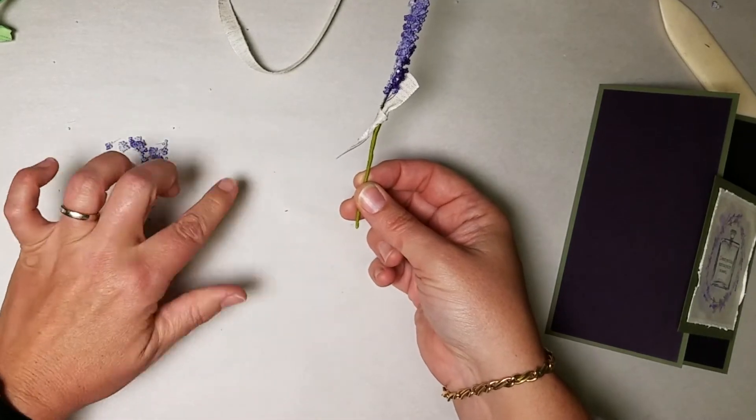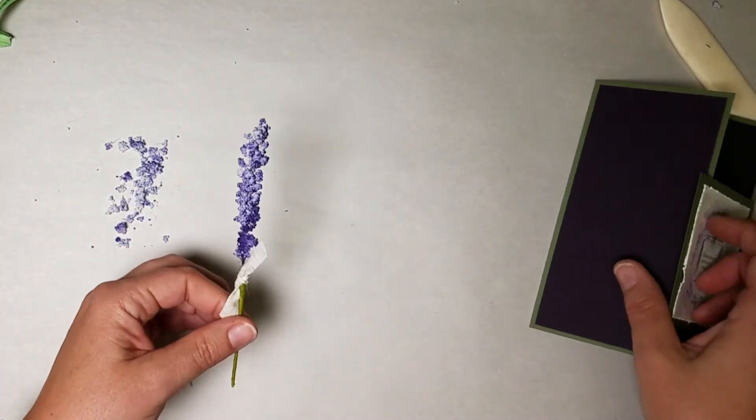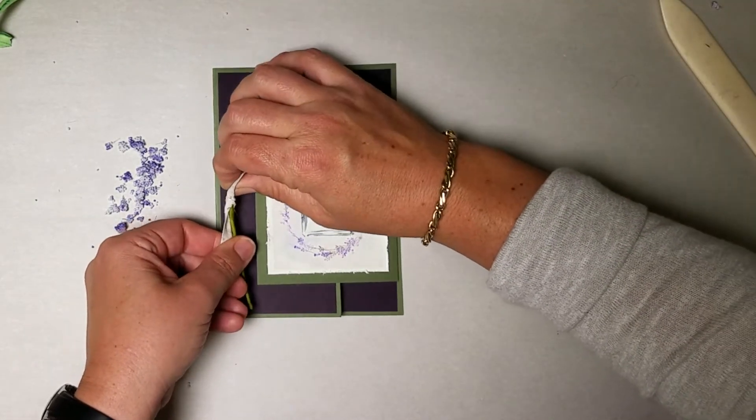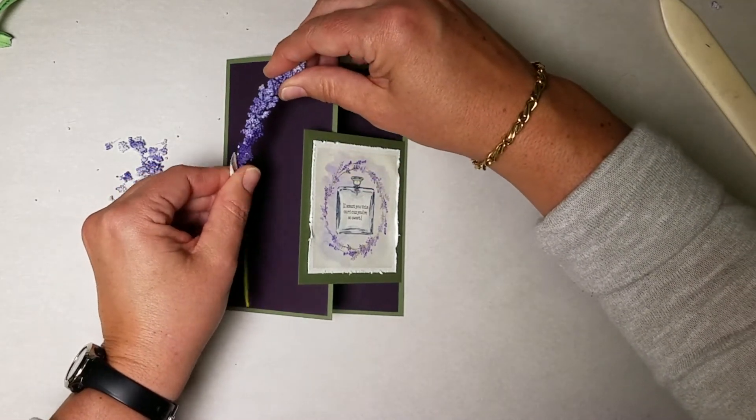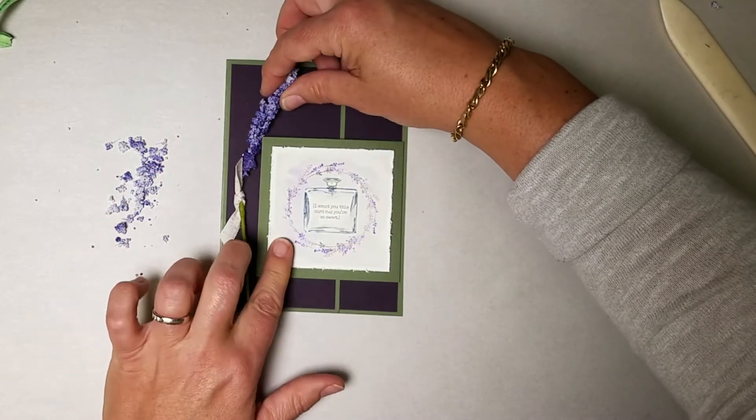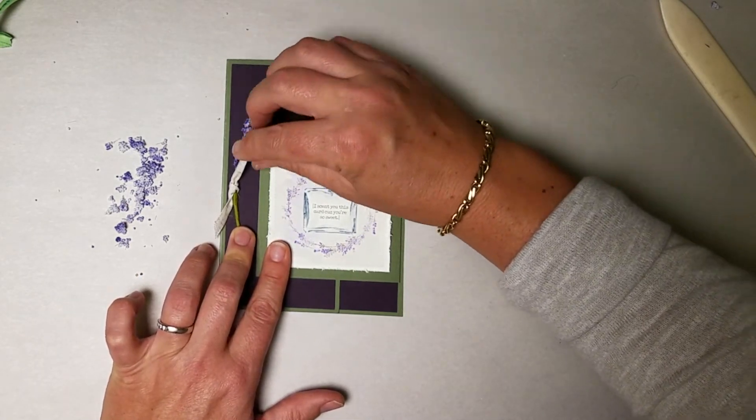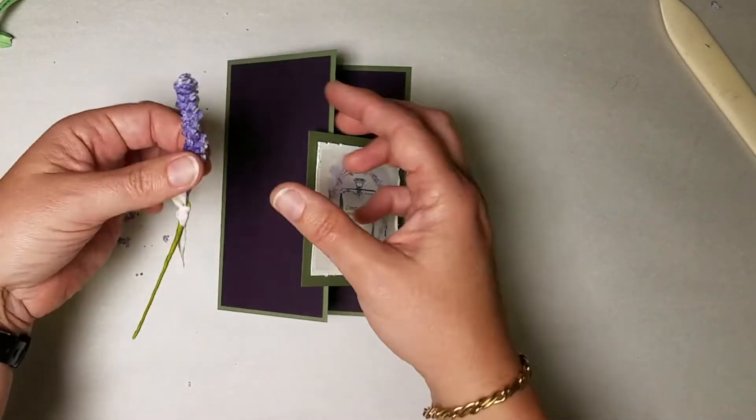Now of course this card is definitely more suitable for hand delivery versus mailing. So if you really do want to put this in the mail and don't want to worry about this, don't add it and just maybe put it on a different card. Now there's also a wire base underneath the sprig, so I'm just going to shape it a little bit so that the sprig sort of wraps its way around the card and positions itself where I want it.